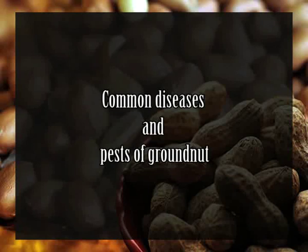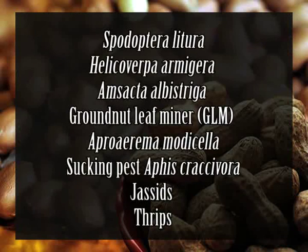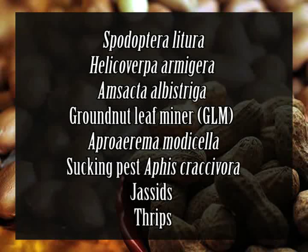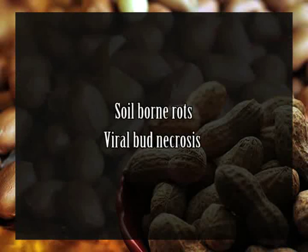Groundnut is a principal oilseed crop that suffers severe yield loss due to insect pests and diseases at different stages of crop growth. Many defoliating caterpillars such as Spodoptera litura, Helicoverpa armigera, and Emcecta albistriga, groundnut leaf miner Aproaerema modicella, and sucking pests like Aphis craccivora, jassids, and thrips attack the crop and cause severe economic losses. Early and late leaf spots, rusts, and blights are serious foliar diseases. Various types of soil-borne rots and viral bud necrosis diseases are other common diseases.